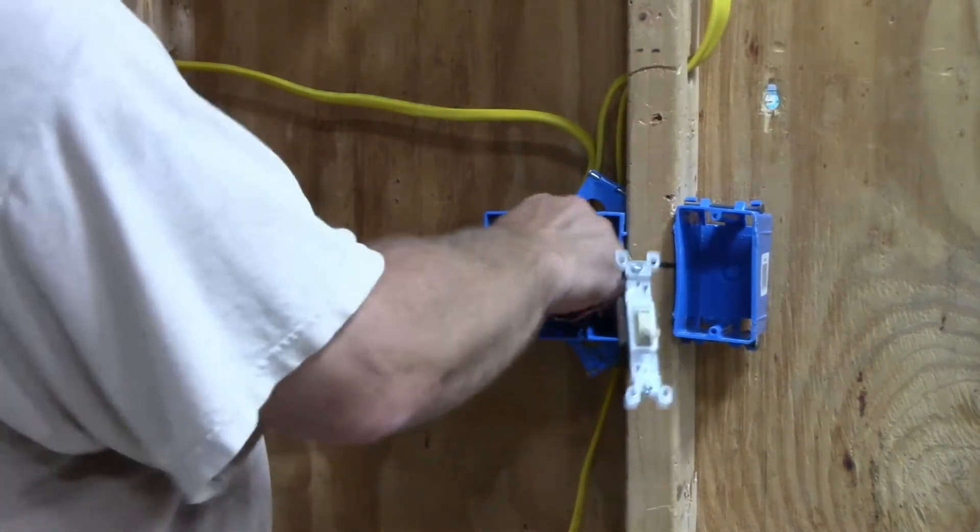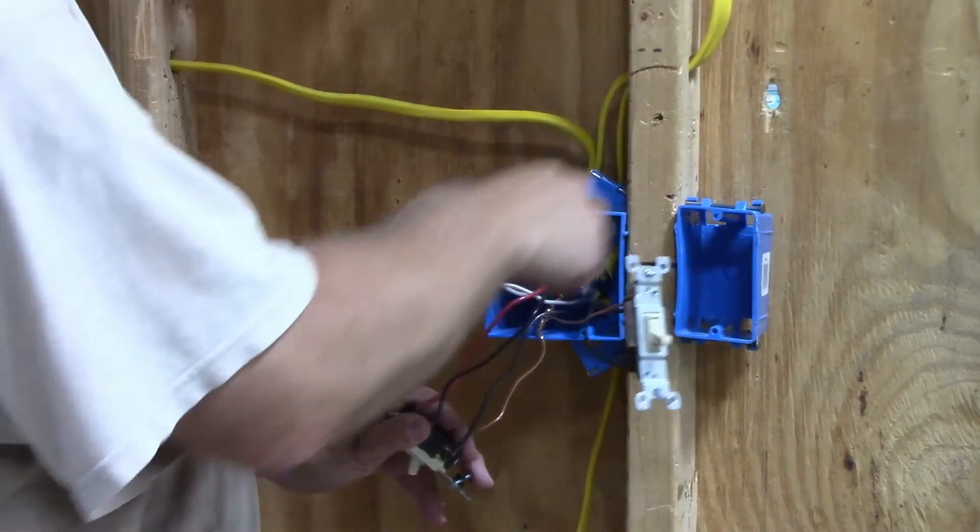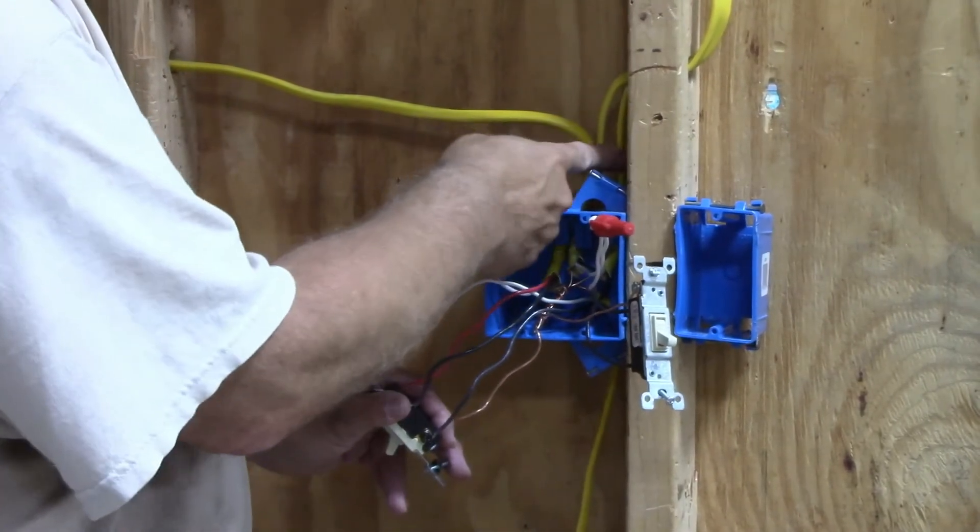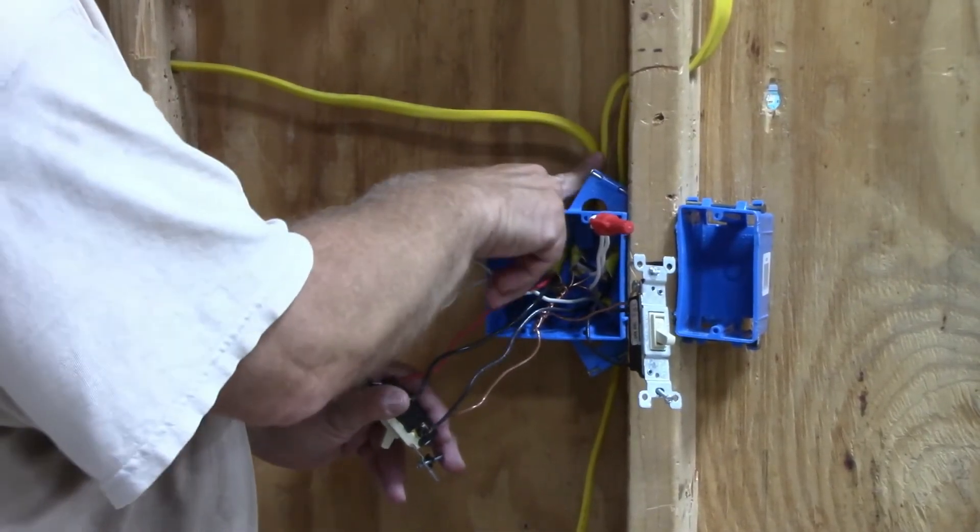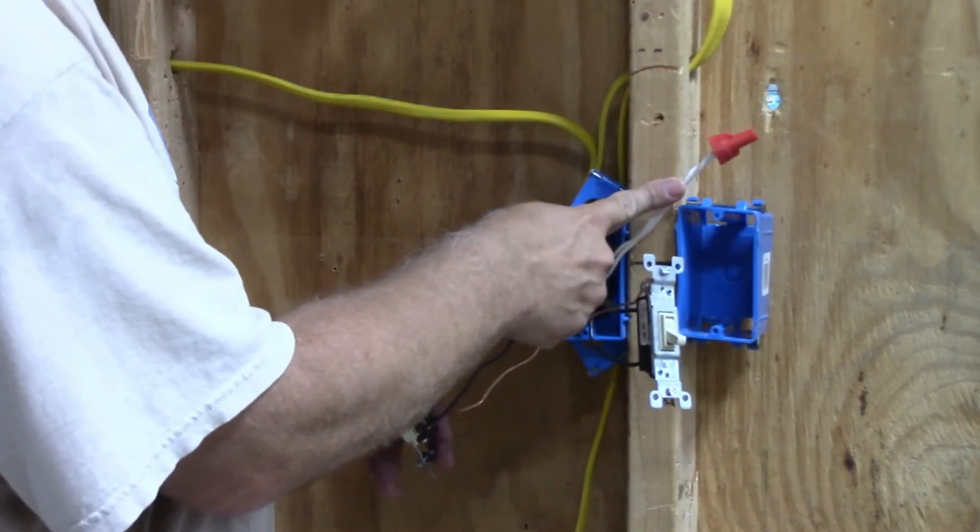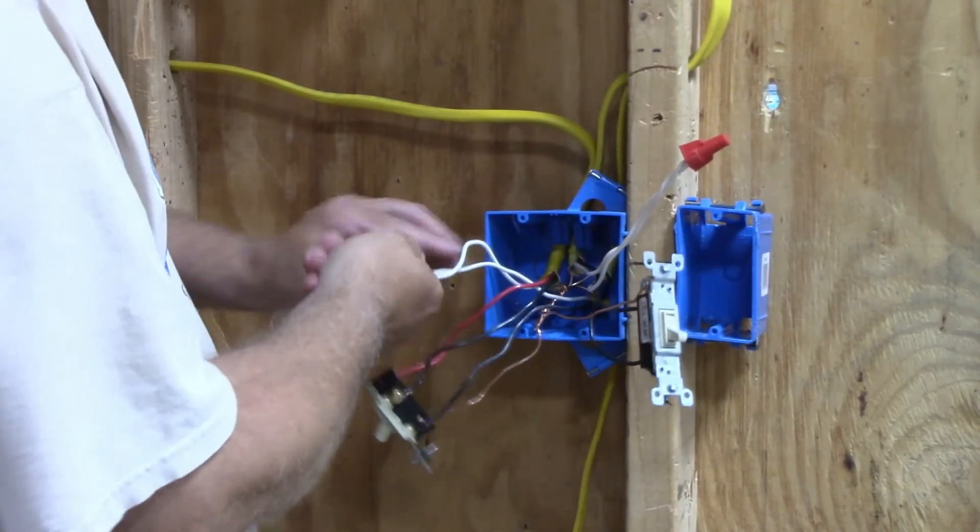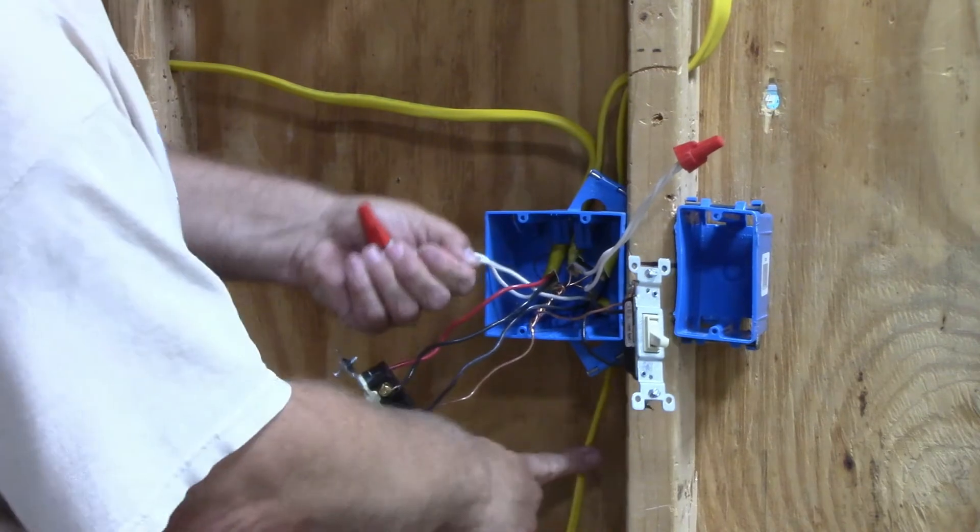With the neutral wires, the neutral wires cannot be mixed. I take the power wire and the switch leg wire neutrals and wire nut them together separately from the three-way and its power wire neutral.